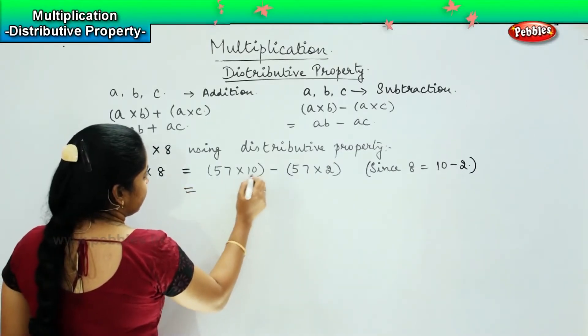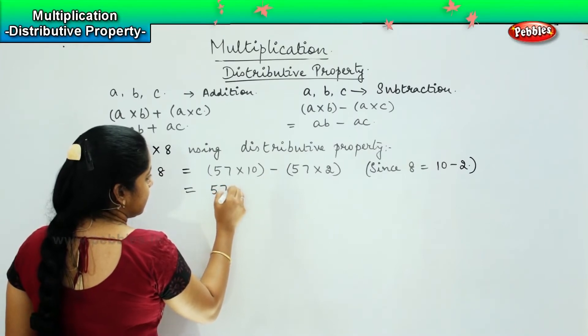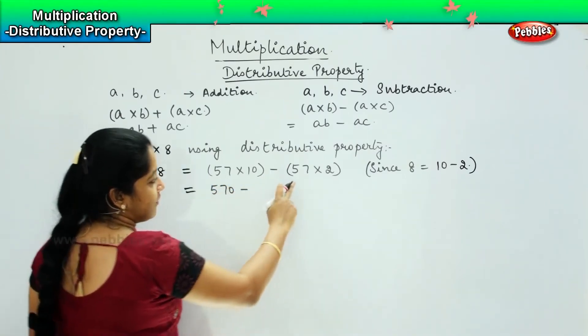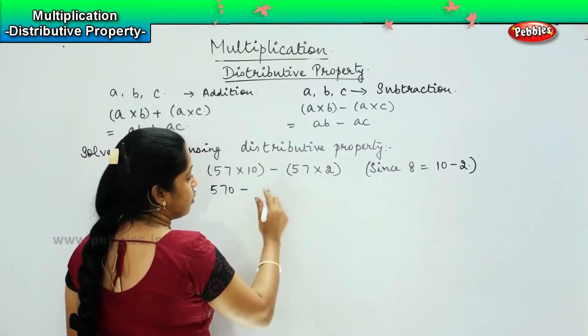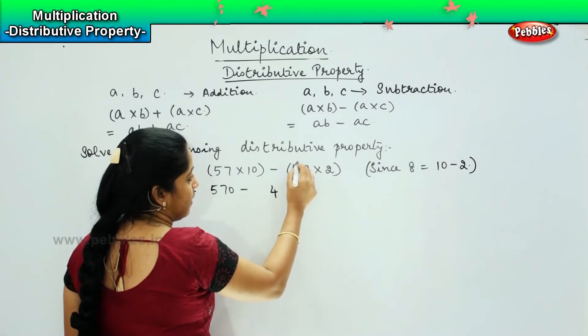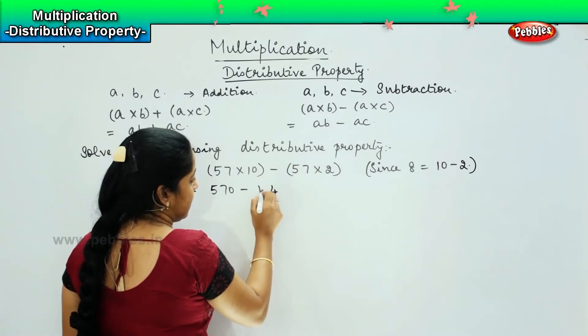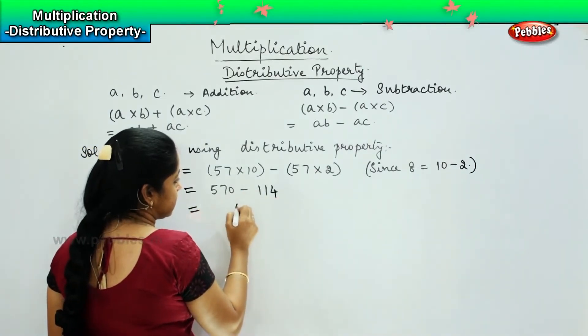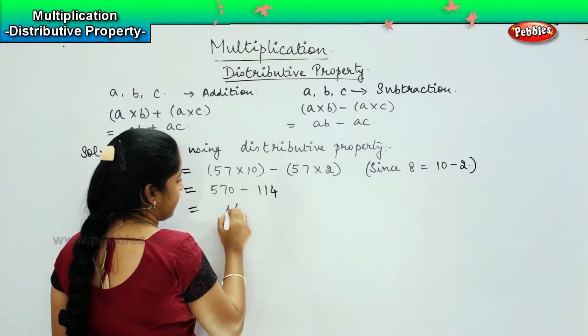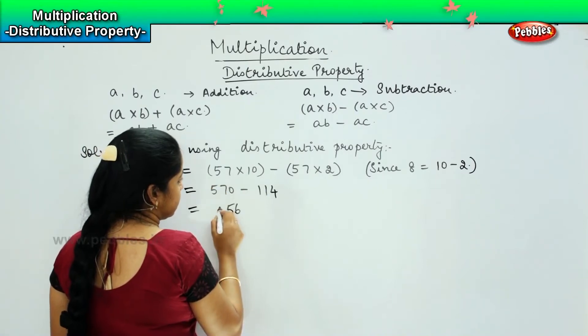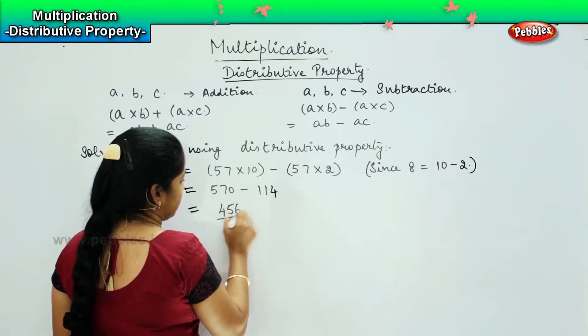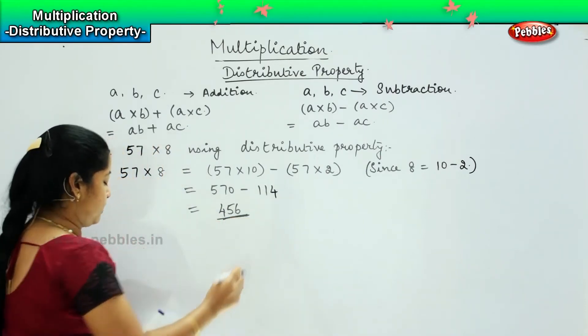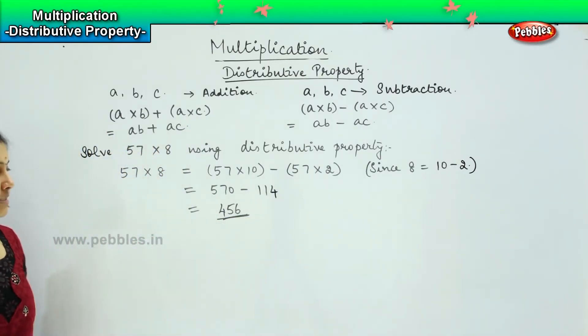So, now 57 into 10 is 570 minus 57 into 2. So, 7 into 2 is 14, carry 1. 5 times 2 is 10, 10 plus 1 is 11. So, my answer will be 0 minus 4 is 6, 6 minus 1 is 5, and 5 minus 1 is 4. My answer is 456.